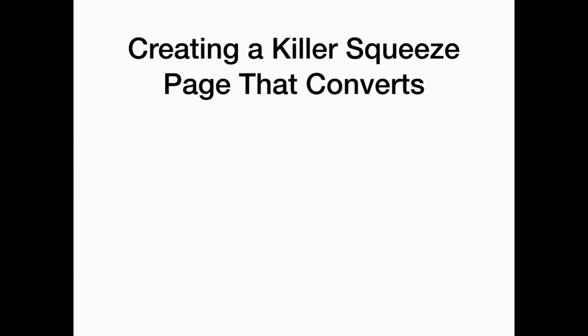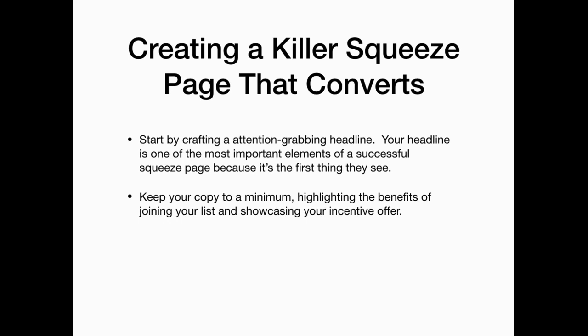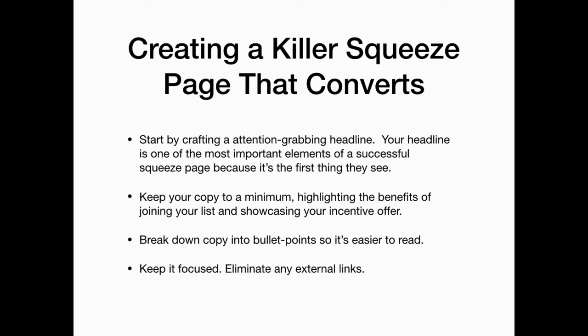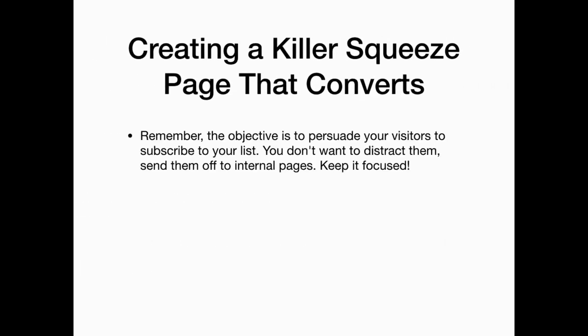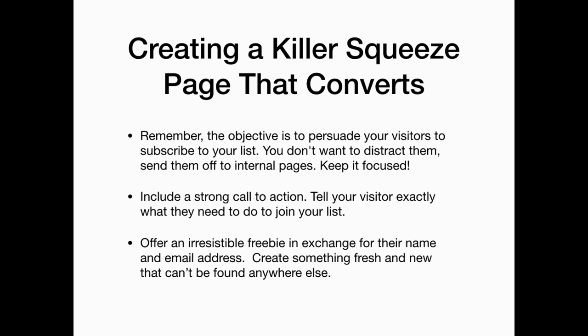Here's how to create a killer squeeze page that converts: start by crafting an attention-grabbing headline, as it's the first thing your visitors see. Keep your copy to a minimum, highlight the benefits of joining your list, and showcase your incentive offer. Break down copy into bullet points so it's easier to read. Eliminate any external links — the objective is to persuade your visitors to subscribe, so don't distract them. Include a strong call to action and tell your visitors exactly what they need to do to join your list. Offer an irresistible freebie in exchange for their name and email address — create something fresh and new that can't be found anywhere else.